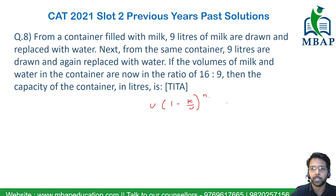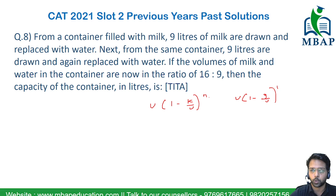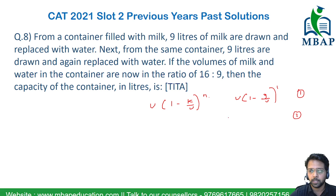After one replacement of 9 liters of milk, the final concentration becomes V times (1 minus 9 upon V) raised to 1. Similarly, after the second replacement, it becomes V times (1 minus 9 upon V) the whole square.